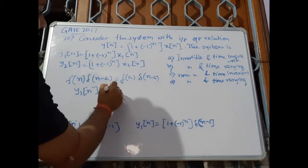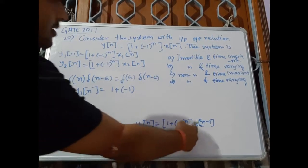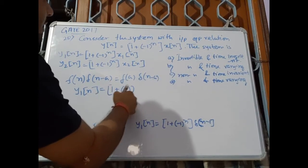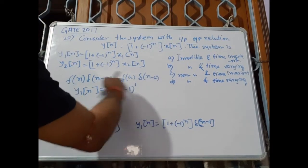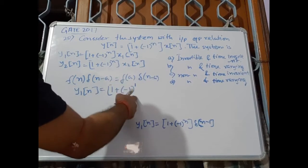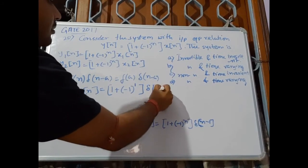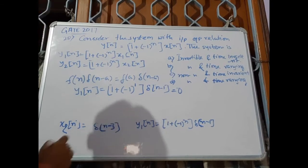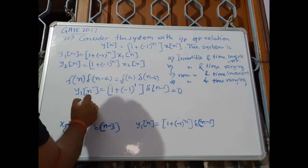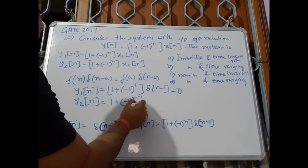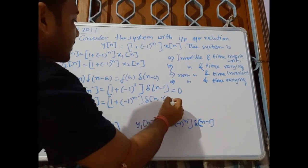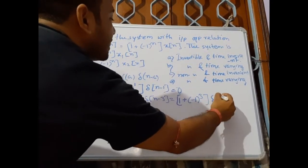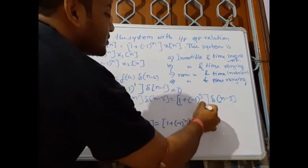Using this property, y1[n] = (1 + (-1)^n) evaluated at n = 1, times delta[n - 1] = (1 - 1) * delta[n - 1] = 0. Now take x2[n] = delta[n - 3]. Then y2[n] = (1 + (-1)^n) * delta[n - 3] = (1 + (-1)^3) * delta[n - 3] = (1 - 1) * delta[n - 3] = 0.